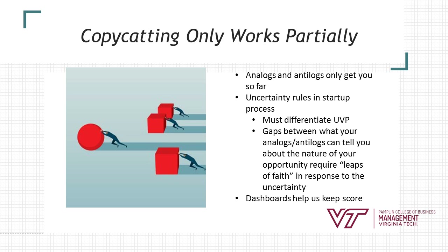Uncertainty rules in startup processes. The key is we need to differentiate — what makes our product and service different from what's already on the market? Our unique value proposition is who we are, what we're about, and how we're going to solve the customer's or the market's problems. The gaps between what we know based on our research, studies, and learnings from analogs and antilogs tell us what opportunities we need to go after — where our leap of faith needs to take us and what that uncertainty helps to reveal.